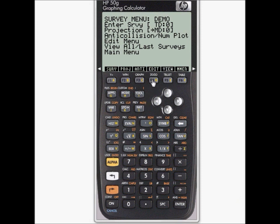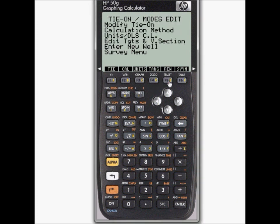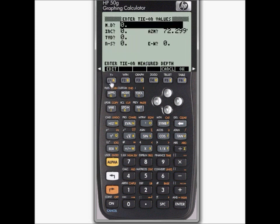So you press edit, and then you press tie, and you start entering the tie-on at the twelve and a quarter. The measured depth is 1834 MB, and the inclination is 63.3.